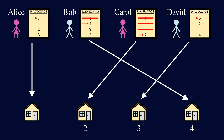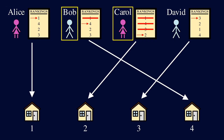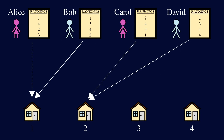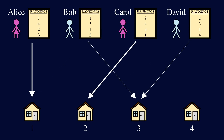This matching is Pareto optimal. Alice and David have their top choice, so they don't want to switch with anyone. And Bob will never want to switch with Carol. So there's no way to make someone happier without making someone else less happy. This algorithm tries to give people the best option they can get while breaking ties with equal probability, so it seems very fair. Plus, you can show it always returns a Pareto optimal assignment. Now, this algorithm seems perfect, so this means we're done, right?